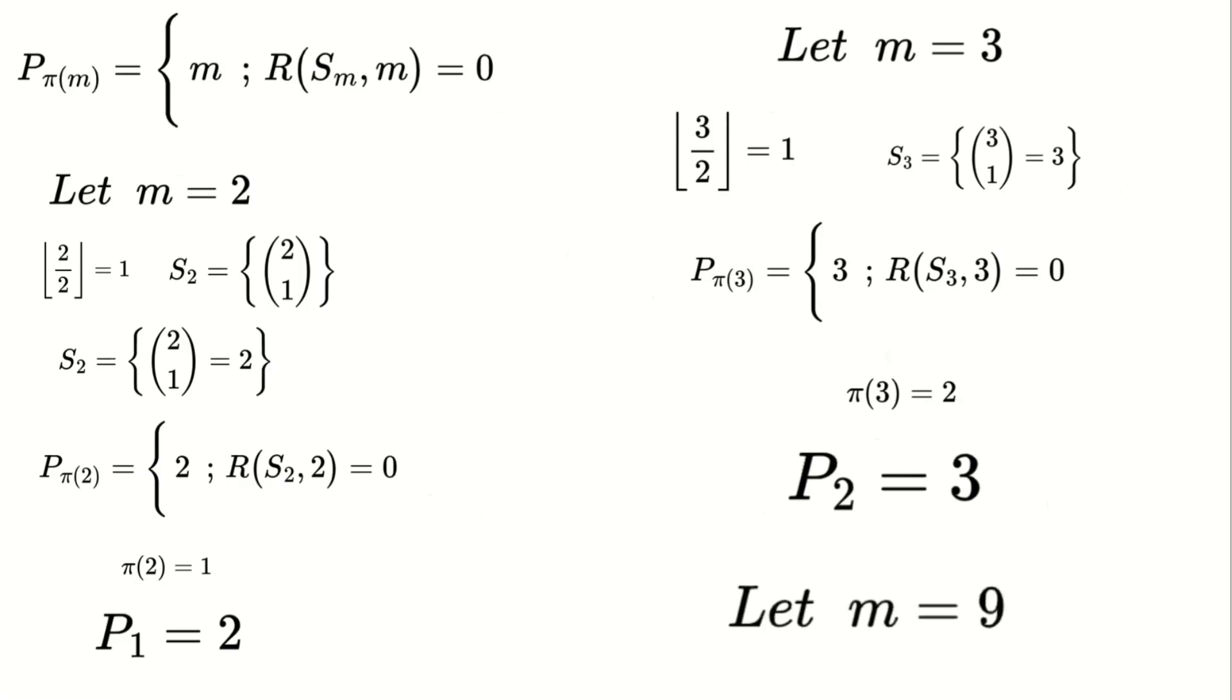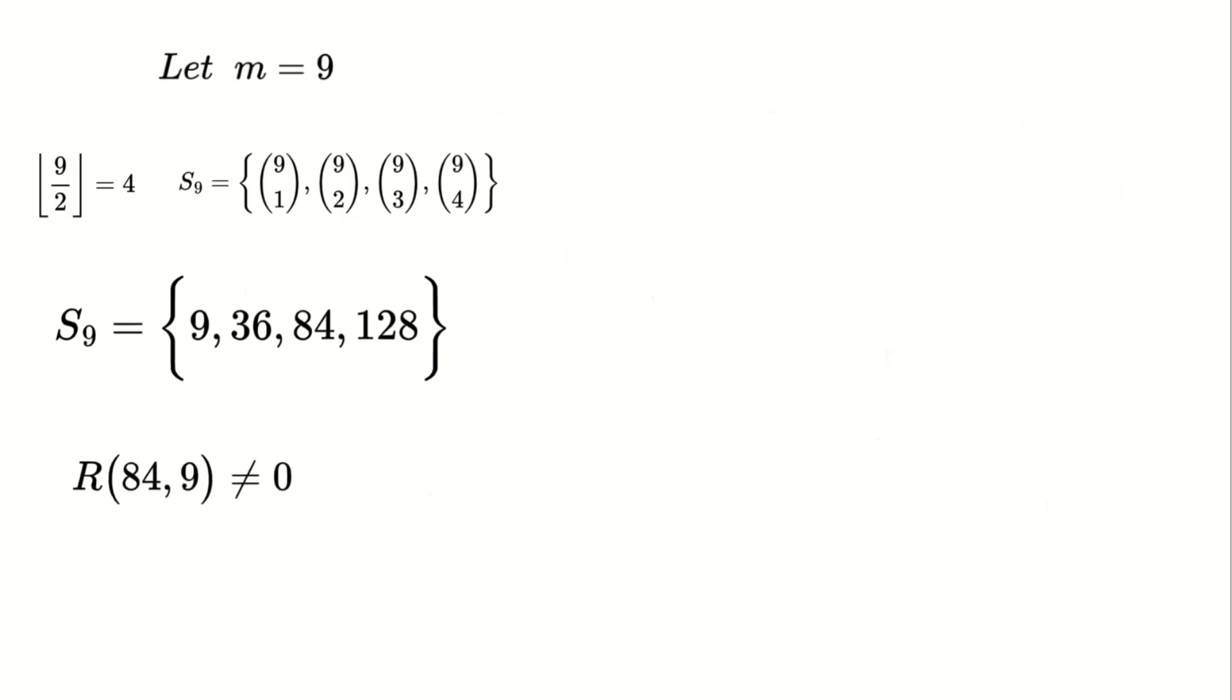Let's continue with m equals nine. The floor of nine over two equals four. So S_9 will have four elements from nine choose one to four. We apply the combination formula and find that none of the elements are divisible by nine. So we don't proceed further.